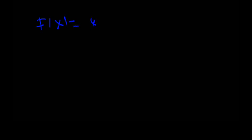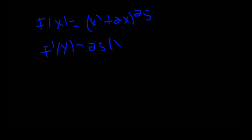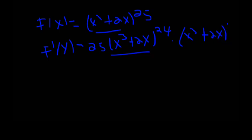f(x) is equal to (x cubed plus 2x) to the power of 25. Using the chain rule: 25 times (x cubed plus 2x) to the power of 24, times the derivative of the inner function (x cubed plus 2x), which gives 3x squared plus 2.